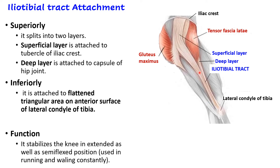The function of the iliotibial tract is to stabilize the knee in the extended position — once the muscles have extended the knee joint, the iliotibial tract takes over. It also helps stabilize the knee in the semi-flexed position, preventing a person from falling forward due to the center of gravity. It is constantly used in running and walking.